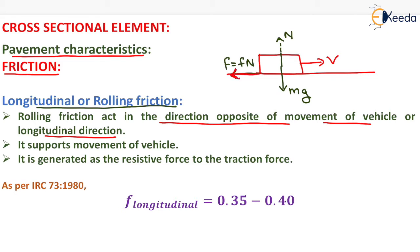The longitudinal or rolling friction supports the movement of the vehicle, because for the movement of a vehicle it requires some type of opposing force that helps in the movement. It is generated as the resistive force to the traction force. The traction force is the force used for the movement of the vehicle, and the resistive force opposes the movement — so the resistive force here is the frictional force.